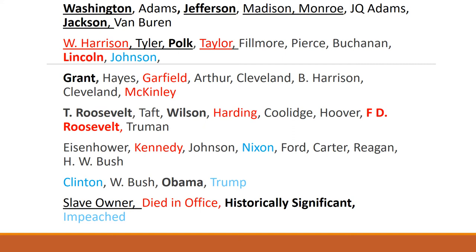Teddy Roosevelt we'll talk about more in this unit — a really interesting guy. Wilson was president during World War One, and FDR was president from the Great Depression through World War Two. We know Barack Obama was our first Black president, making him an extreme outlier. All the presidents except Obama and Kennedy were WASP — white Anglo-Saxon Protestants. Kennedy was Catholic, Obama was half African descent, and the rest were white and Protestant.